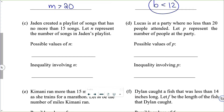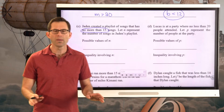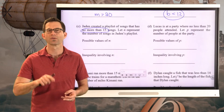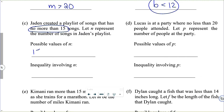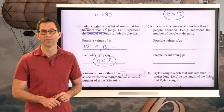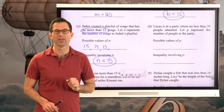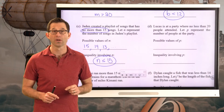Letter C: Jaden created a playlist of songs that has no more than 15 songs. Let N represent the number of songs. This is a trickier phrase — 'no more than 15' means Jaden can't have 16, 17, or 18 songs, but he could have 15, 14, 13, etc. Which means the number of songs must be less than or equal to 15. 'No more than 15' is a tricky phrase — it's sometimes easier to think about what you can't have.